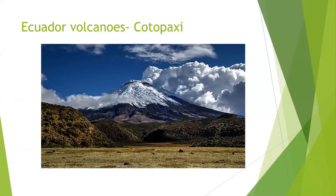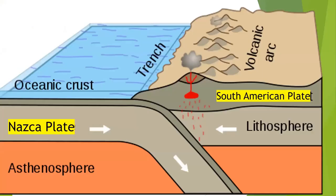Ecuador has plenty of volcanoes. Here's one of them, Cotopaxi. This volcano looks like the average volcano — it's called a composite volcano, has a typical cone shape, and it is active because it is part of the Andes mountain chain.